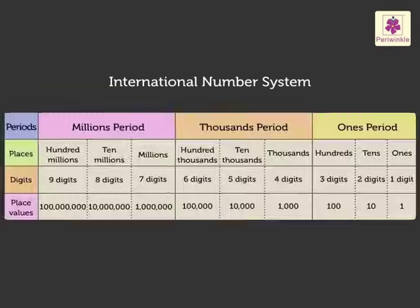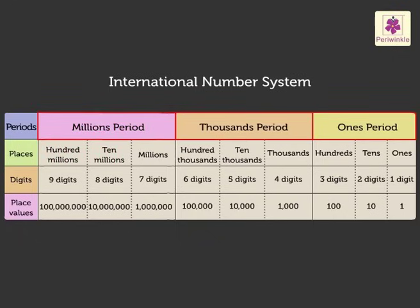Look at this table. It shows the periods, the places, and the place values. In this system, the six-digit numbers are placed in the ones and the thousands periods. The seven-digit numbers are placed in the ones, the thousands, and the millions periods. Here, each period consists of three places.